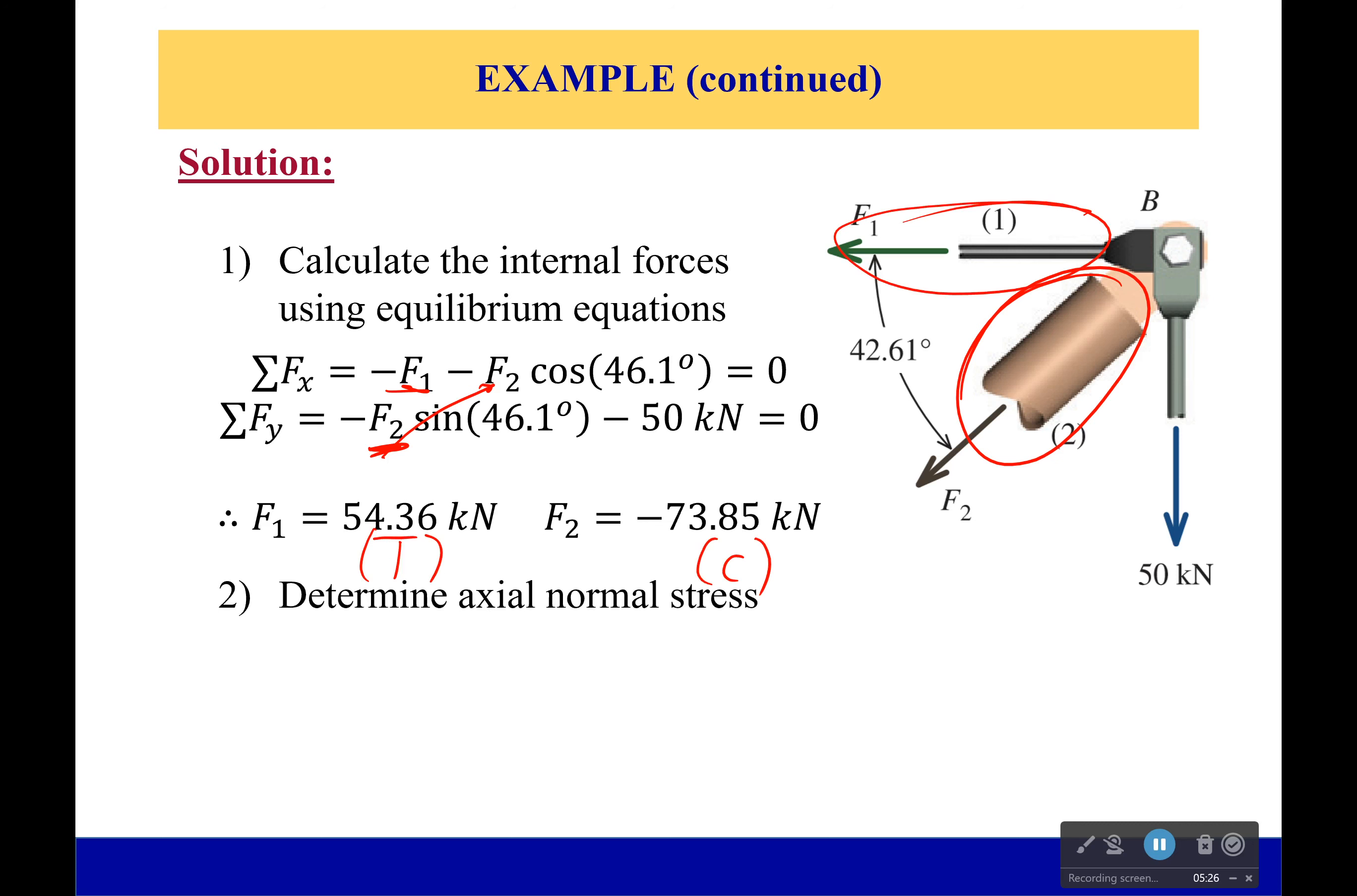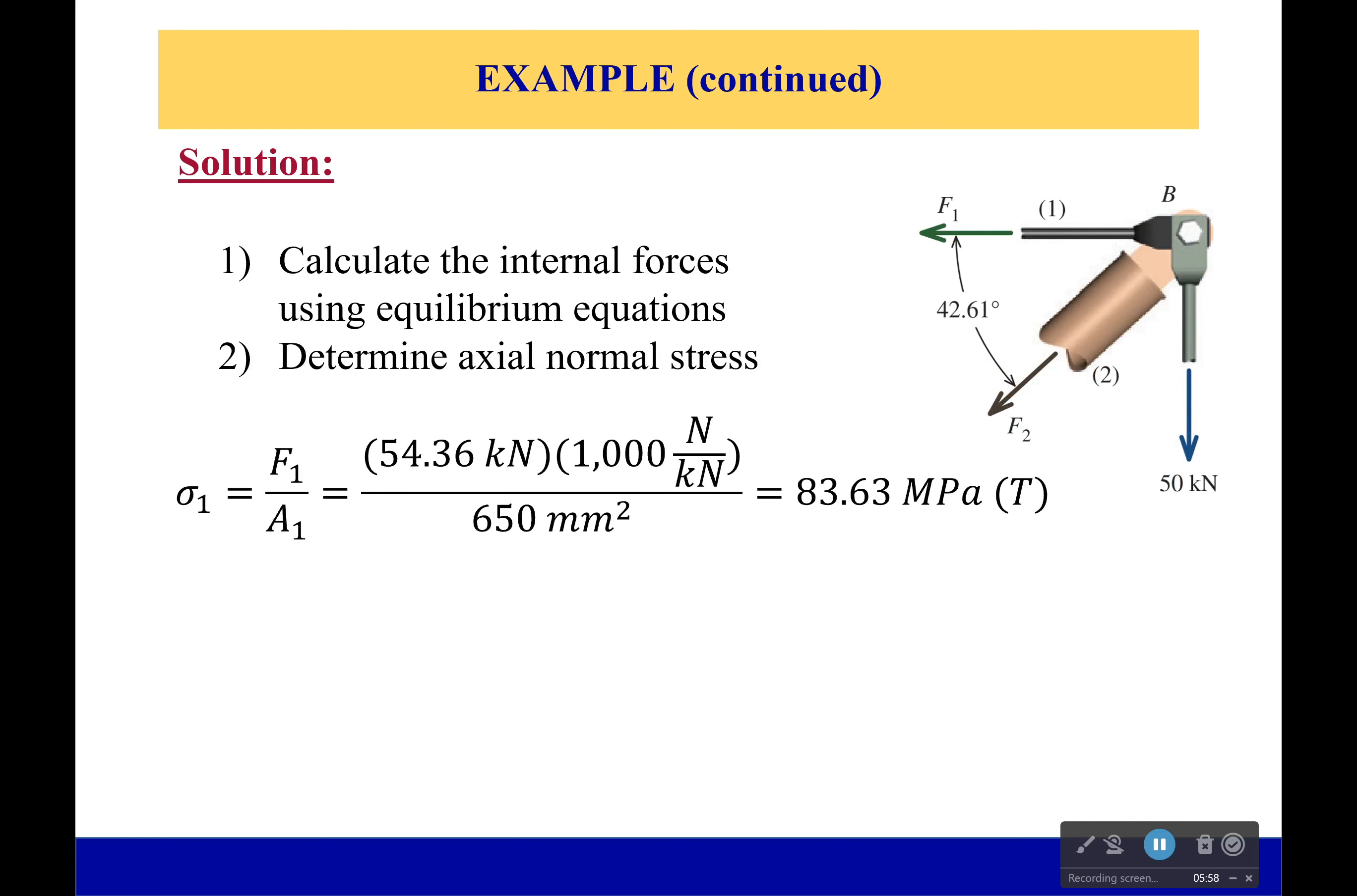What is the axial normal stress? Well we know the internal force, we already know the area, so if we plug it in there we can solve for it. Remember the reason I went from kilonewtons to newtons is because one newton per millimeter squared is equal to one megapascal. I cannot say that enough. It's one of those things that will just make everything so much easier in life if you remember it. So one newton per millimeter squared equals one megapascal. Okay now we're going to calculate those stresses. So we get 83.63 megapascals for our force one and 79.84 megapascals for our force two. One in compression, one in tension.